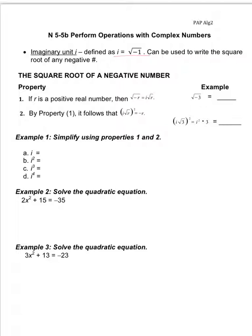The first property: if r is a positive real number, then the square root of negative r equals i times the square root of r. So for the square root of negative 3, we bring the negative on the outside, making an i, and then we have the square root of 3. Basically, the imaginary i brings the negative outside the radical so you can simplify the positive number left under the radical.